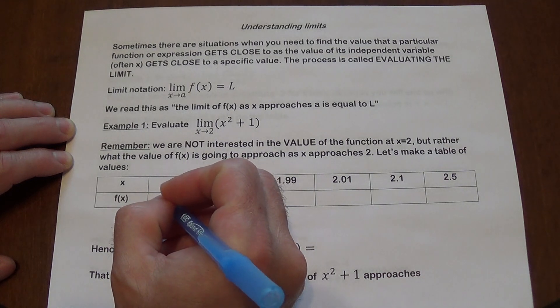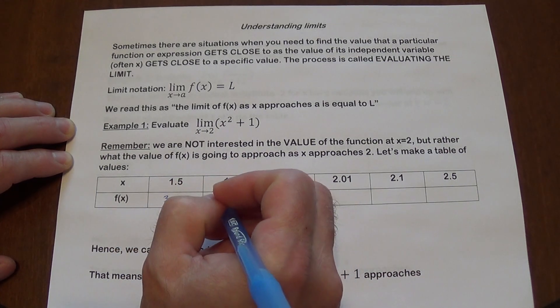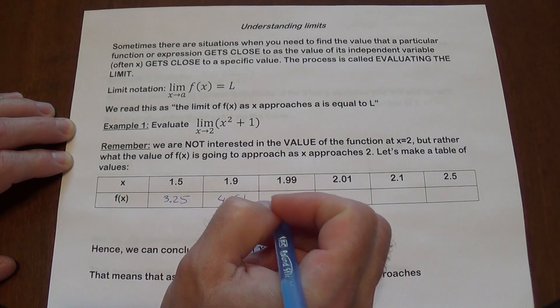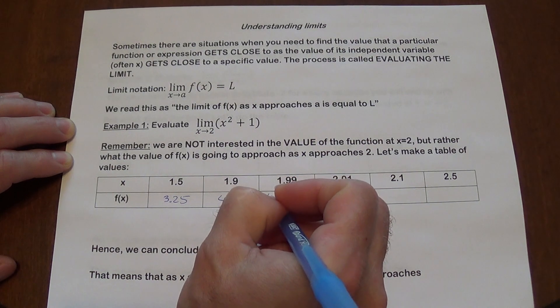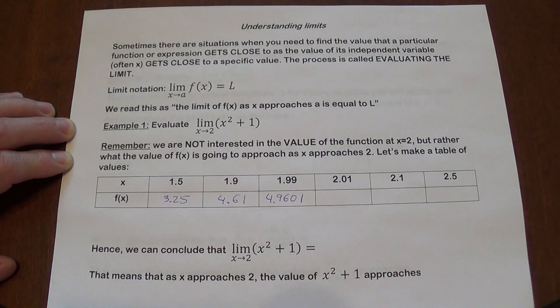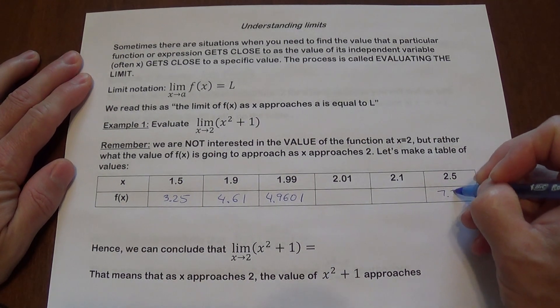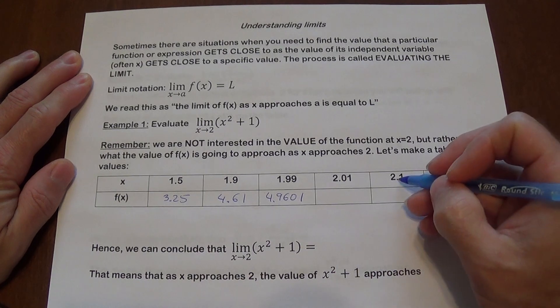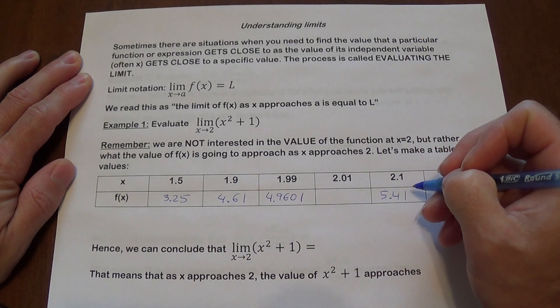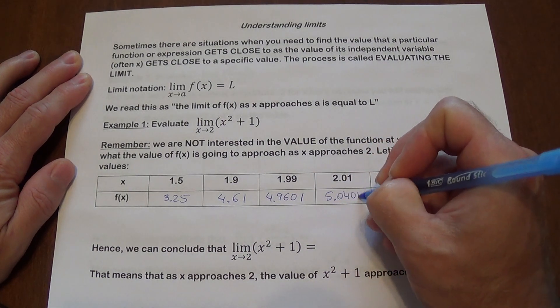So if you do this, for 1.5 you're going to get 3.25. For 1.9 you're going to get 4.61. For 1.99 you're going to get 4.9601. If I'm going to approach from the other side, for 2.5 I get 7.25. For 2.1 I get 5.41. For 2.01 I'm going to get 5.0401.